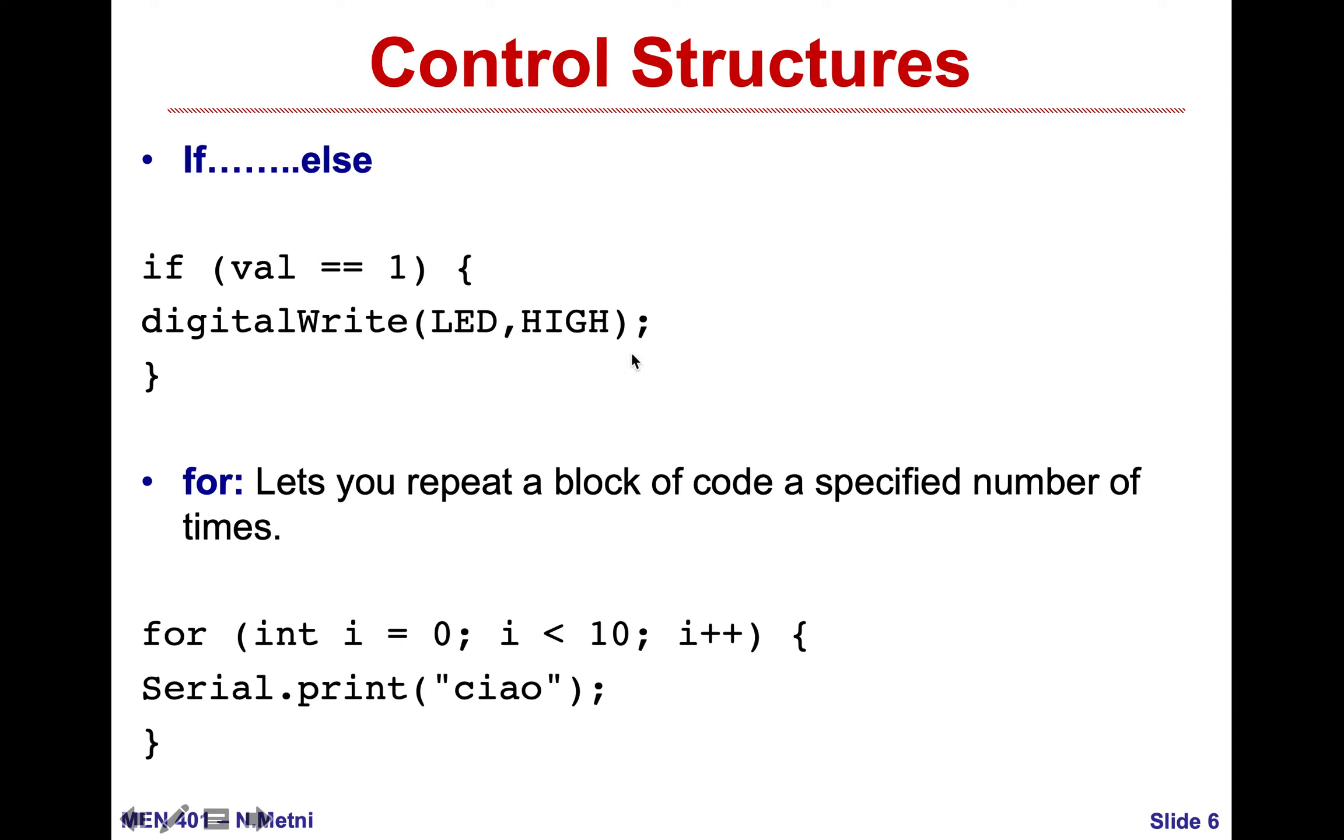Here the double equal is in order to test, because if we put val equal to one, I am assigning one to the variable and it's always true. If I want to test if my value is equal to one, I should put two equal signs.